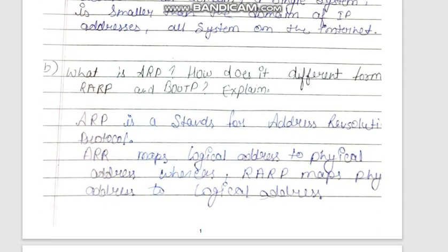Another question is: what is ARP and how is it different from RARP and BOOTP? ARP stands for Address Resolution Protocol. It maps a logical address to a physical address, whereas RARP maps a physical address to a logical address.